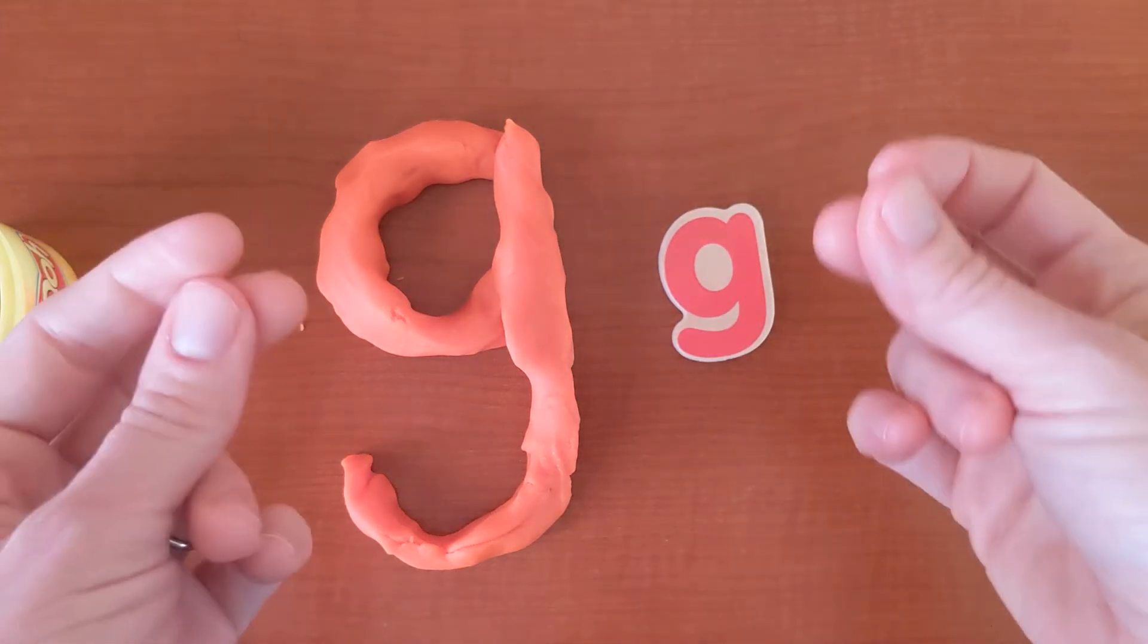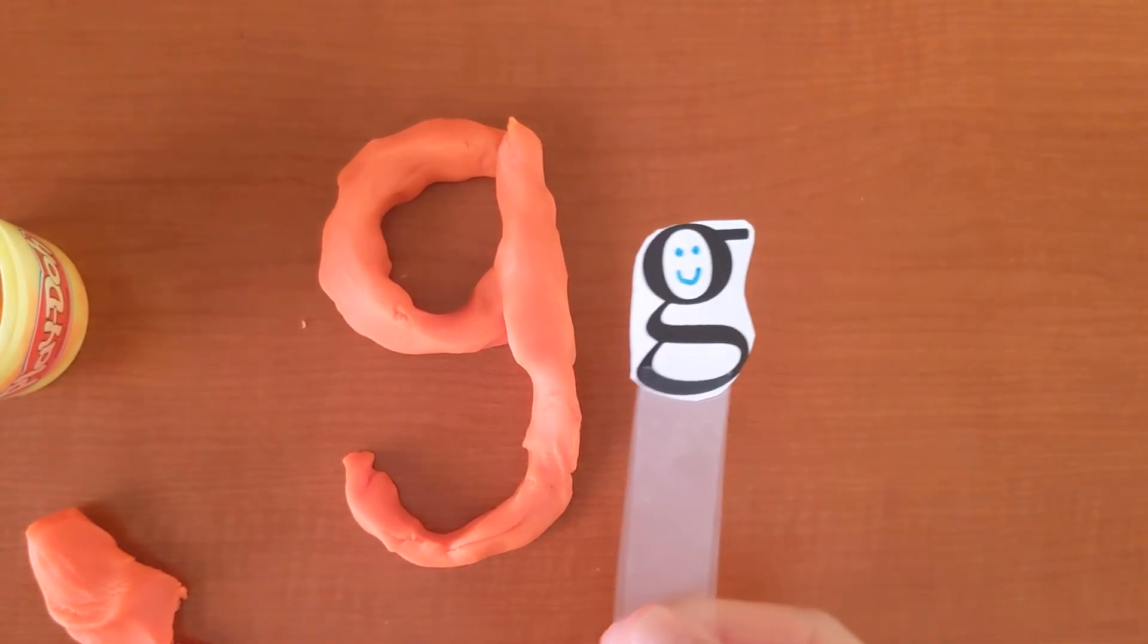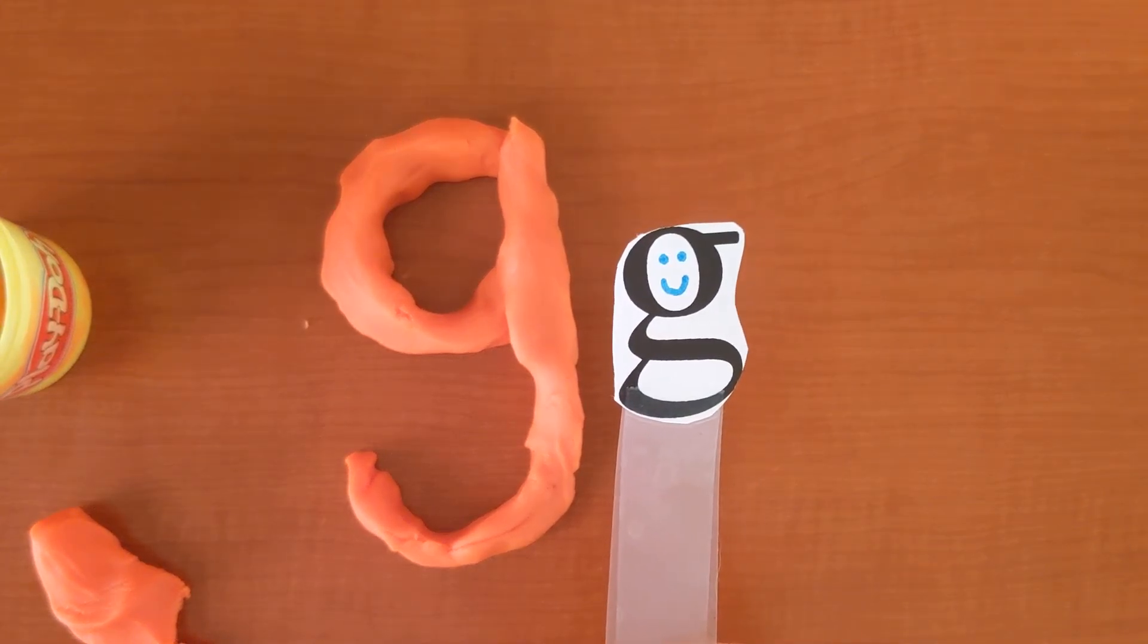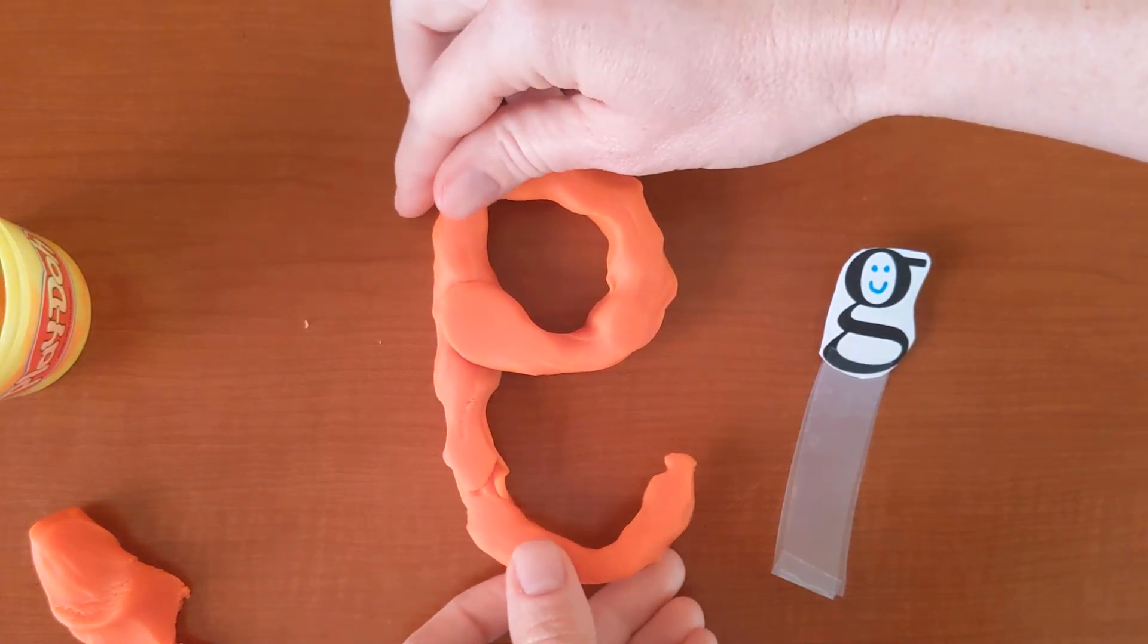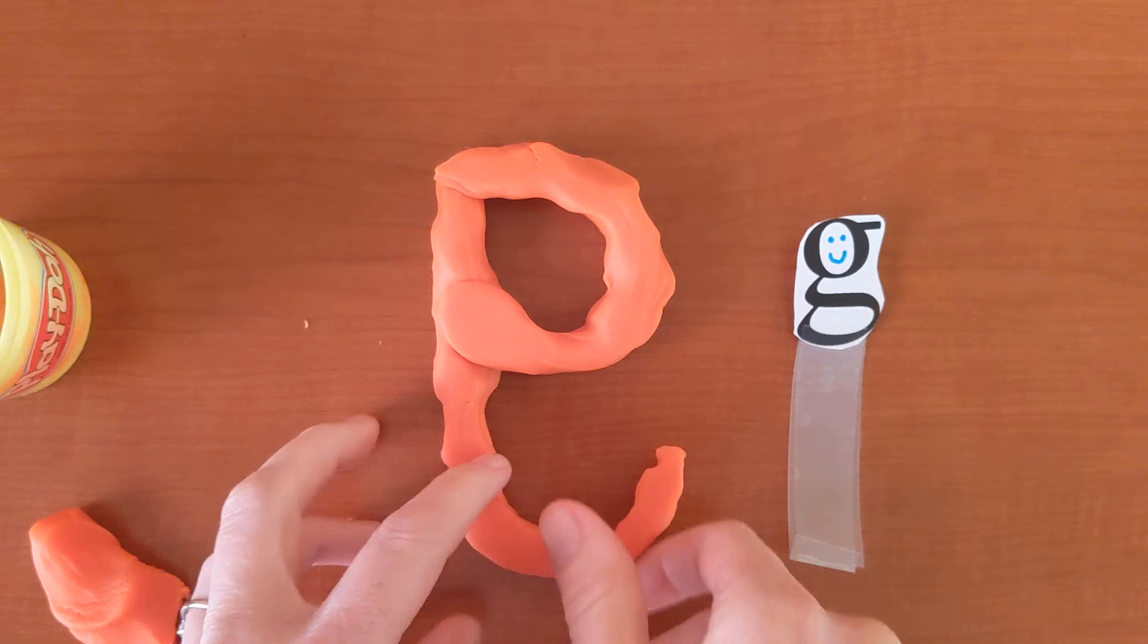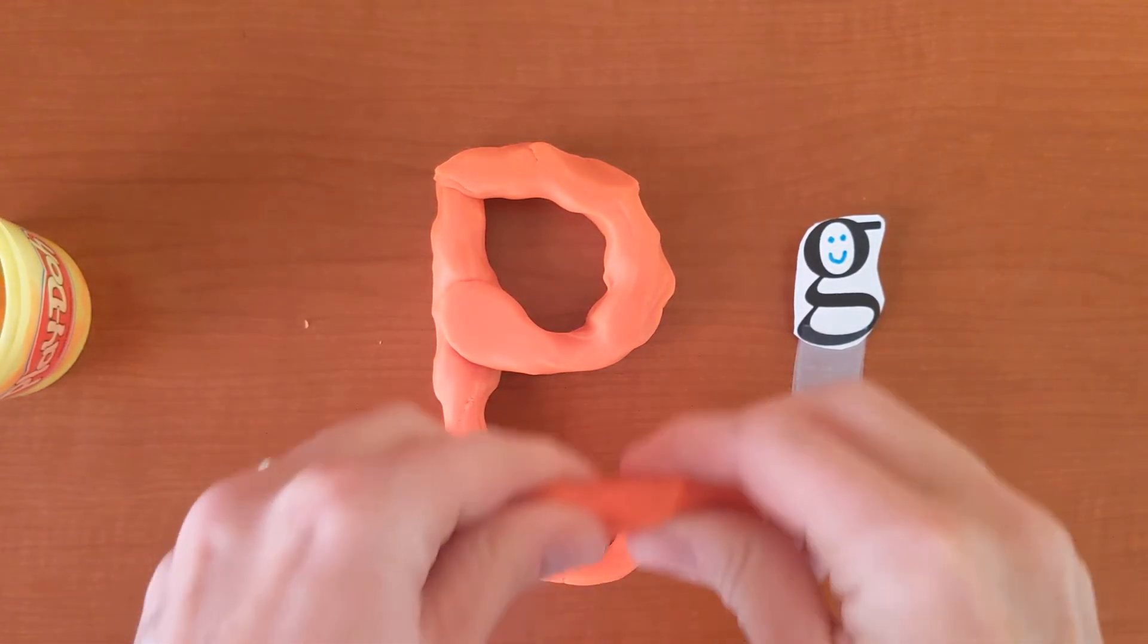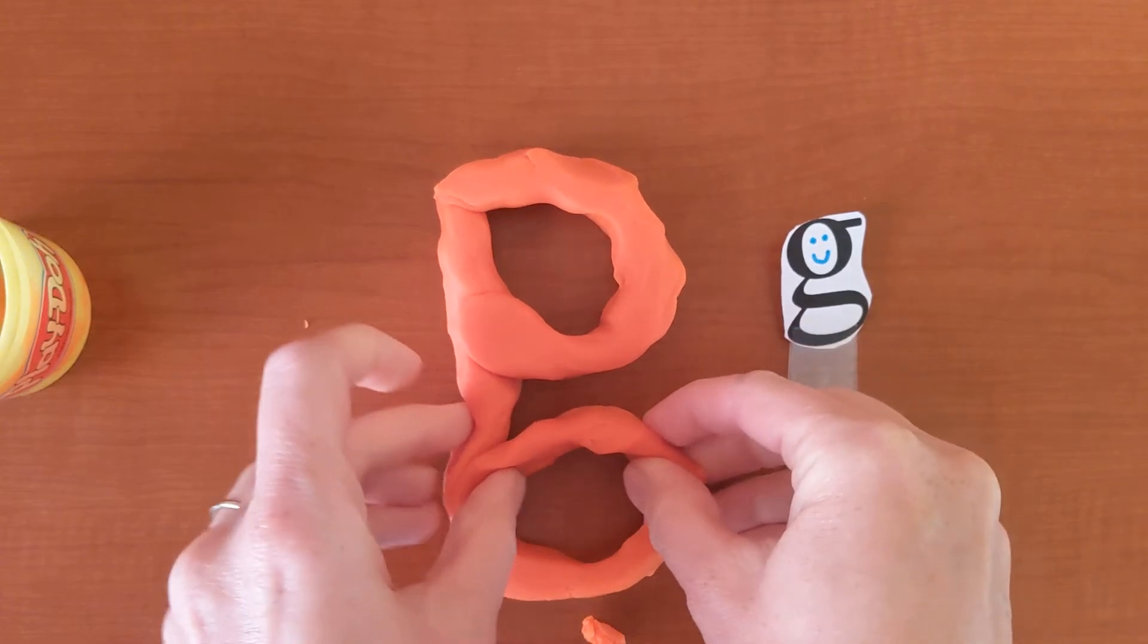Now, we want to make her fancy. Boing! To make a G fancy, first we're going to flip it over. Ready, set, flip! All right. We're going to flip it over. And we also have to turn this part into a circle or an oval down here. So, I'm going to add some more Play-Doh.